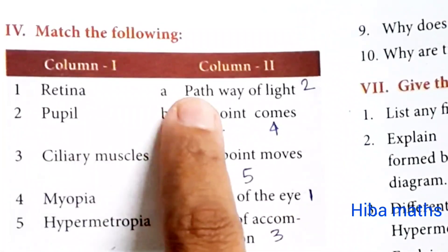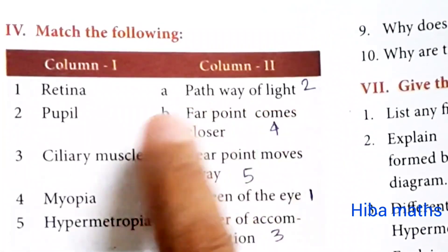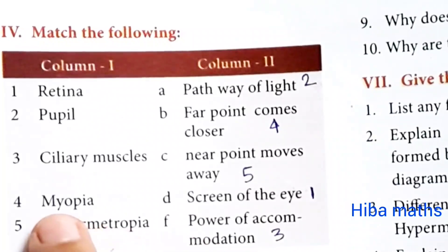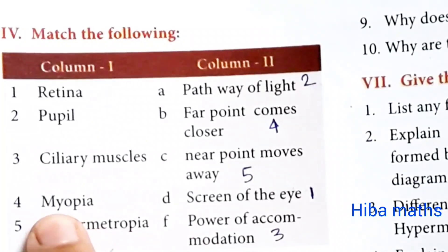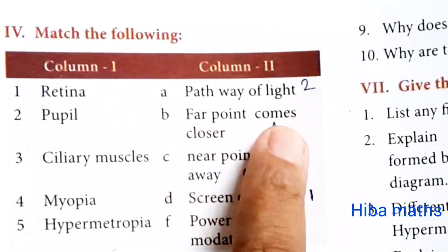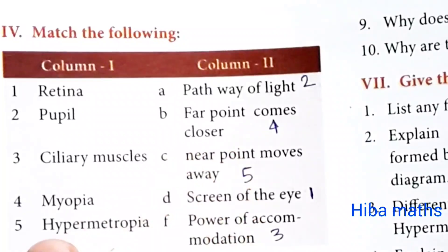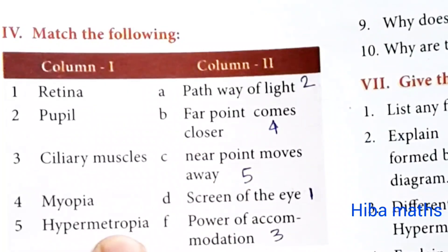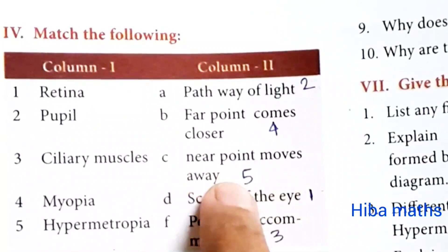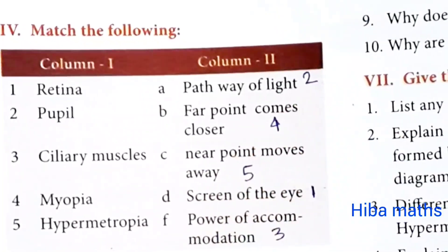Match the following: retina — screen of the eye; pupil — pathway of light; ciliary muscles — power of accommodation; myopia — far point comes closer; hypermetropia — near point moves away.